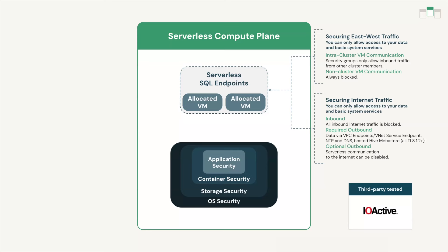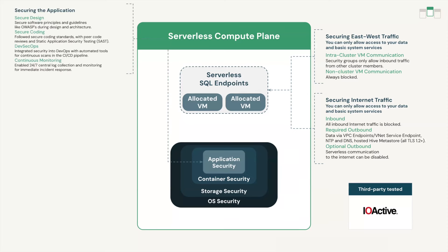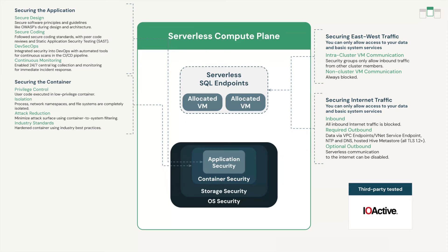These layers are also extensively tested by both our in-house offensive security team and external penetration testing companies such as IO-Active to protect your data at all times. We secure application deployments through guidelines such as OS hardening during design and architecture, following secure coding standards with static application security testing and continuous log collection and monitoring for incident response. Containers run in low privilege mode to limit system calls that could provide access outside of the container, and use an isolated process namespace, isolated network namespace, and isolated file systems. Since this compute may have attached EBS volumes or local SSDs, we ensure that storage is ephemeral, encrypted, and dedicated to the attached VMs, and all storage is securely wiped once the compute resource is complete.